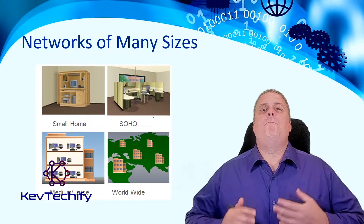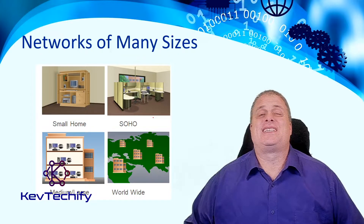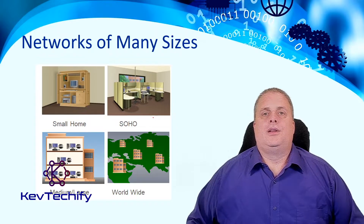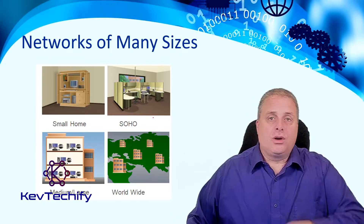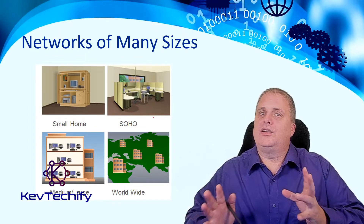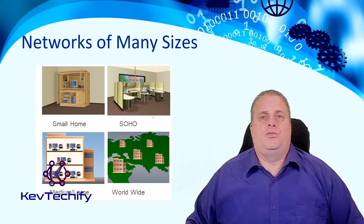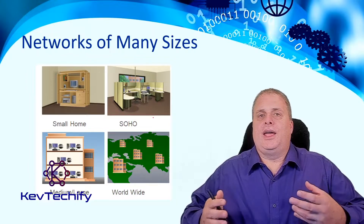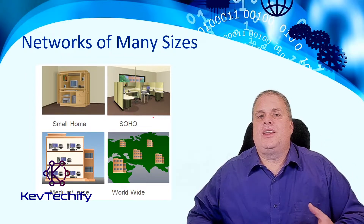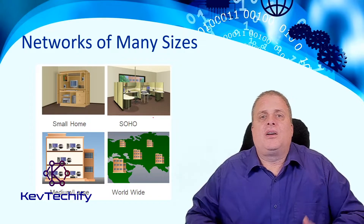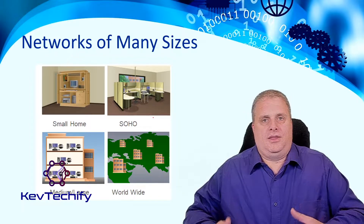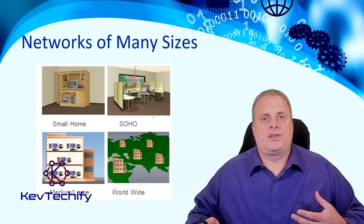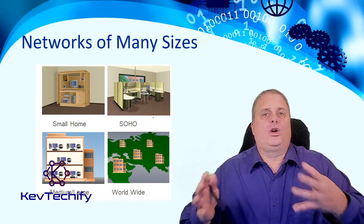In today's world, there are many different types and sizes of networks. We're going to talk about four different sizes to give you an idea of where they fit in. First is the small home network — probably what you have at home or your apartment. You have your internet service provider coming into that $50 to $200 Linksys, Belkin, or D-Link router. That network works great for a couple of users, maybe a couple of streaming devices, and a printer.